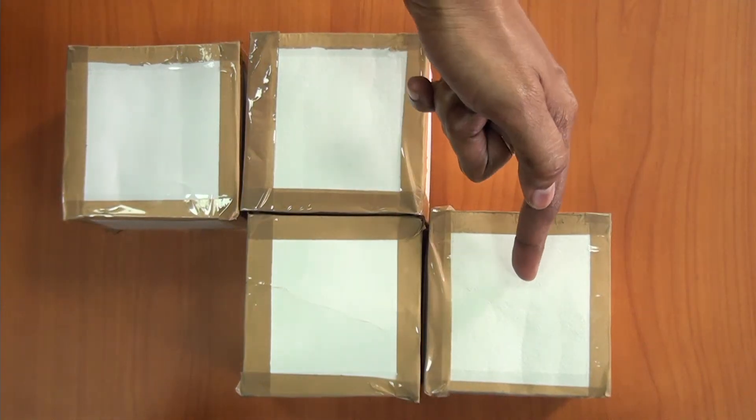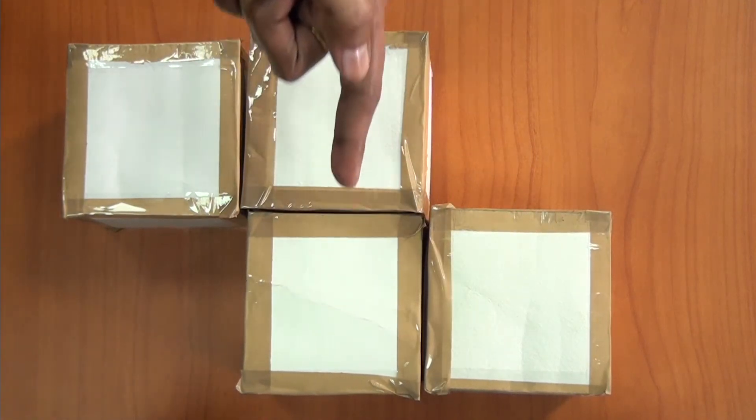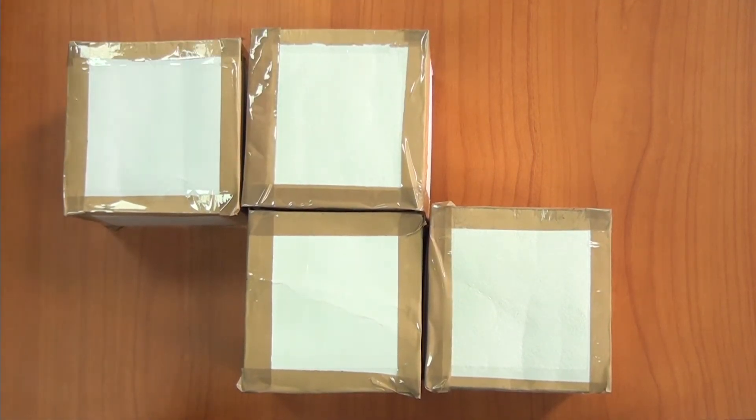Now to the top view. When we look at the object from the top, what can you see? Yes, there are 4 squares.